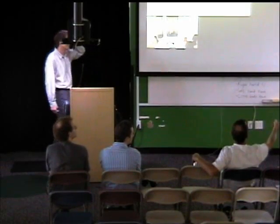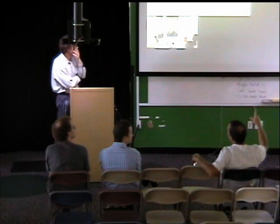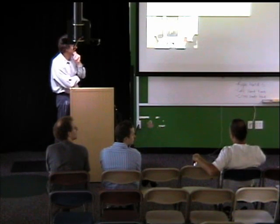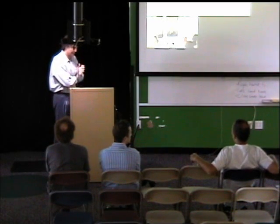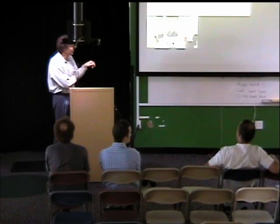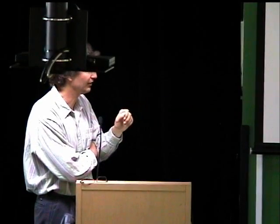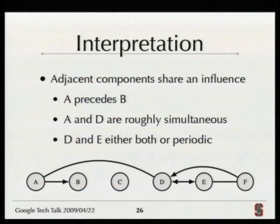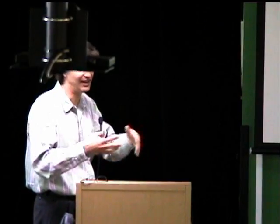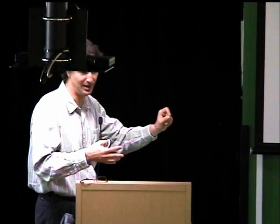If A and D are correlated but there's no edge from D to B, that could be a case where the correlation doesn't quite meet the threshold. One thing you can do is vary that threshold with a slider to see edges come and go, giving a feeling for where the best graph is. You'd want to set epsilon to show the most important edges.